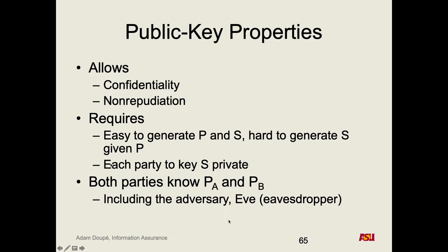So that means if all of you have the public key, it should not be possible to derive the secret key from the public key. The other assumption we're going to make is that everyone knows everyone's public key, including our attackers. So we're going to introduce Eve, our adversary, our eavesdropper. Everyone, including Eve, knows the public key of Alice and Bob, but does not know their secret keys.